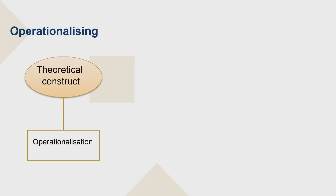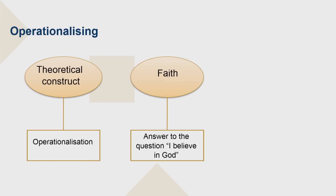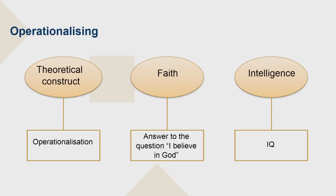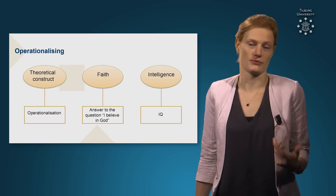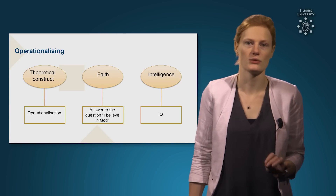Let's look at an example. This is a schematic way of representing operationalizing. I have this theoretical invisible construct at the top, and what I want to do is make a visible operationalization of that. For example, if I want to measure faith — faith is not something I can directly see — I could try to make it visible by simply measuring the answer to the question 'I believe in God, yes or no.' Or another example: if I want to measure intelligence, I cannot directly see your intelligence, so I need to make it concrete. That's often done with an IQ test — a series of different types of tests — and a score rolls out that represents your value on intelligence.